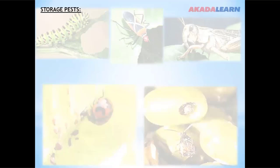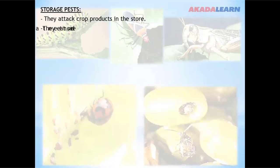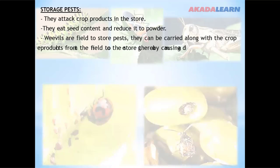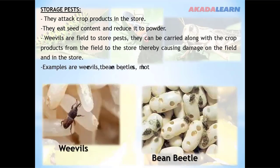Storage insect pests attack crop products in the store. They eat seed content and reduce it to powder. Weevils are both field and store pests — they can be carried along with crop products from the field to the store, causing damage in both environments. They start attacking crops, most especially cowpea, from the field through to the store. Examples of storage pests are weevils, bean beetles, and moths.